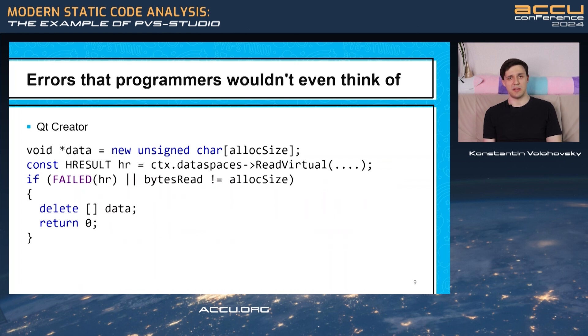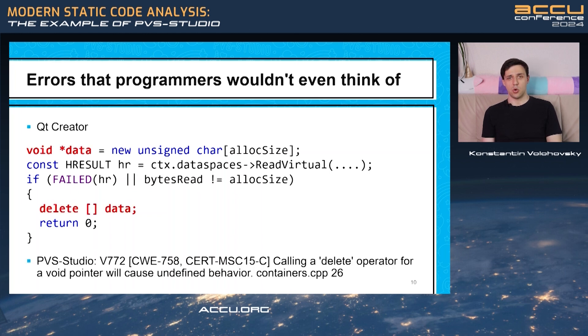And the last type of errors, but not least. The errors that programmers may not even consider finding, like this one from Qt Creator. Here the developer creates an array of characters. And in case of failure, they try to erase memory for it. But they use delete operator on a variable of pointer void type. And you don't want to have that in your codebase. Because whilst compilers allow that, this is undefined behavior.